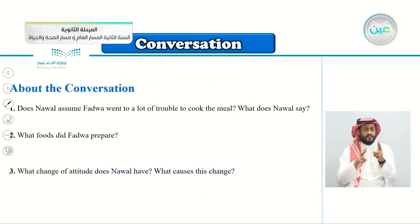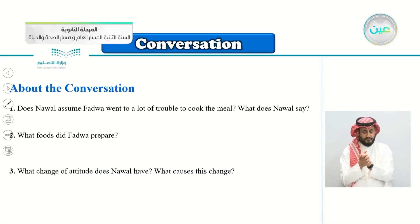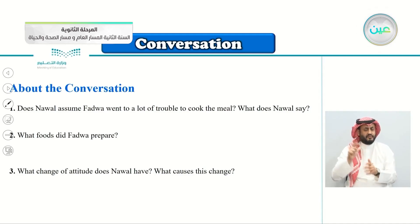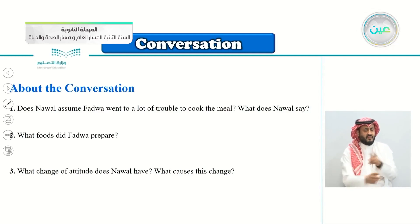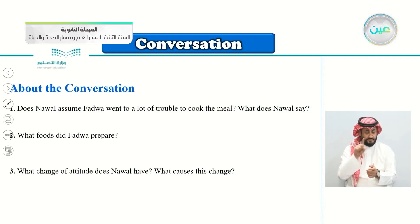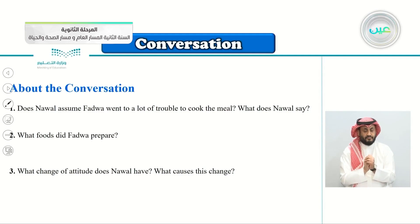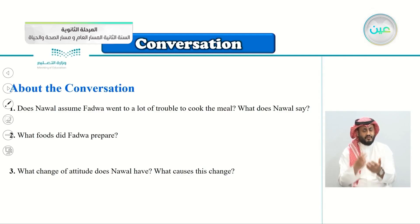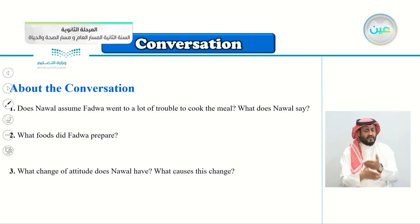About the conversation questions: Does Nawal assume Fadwa went to a lot of trouble to cook the meal? What does Nawal say? What foods did Fadwa prepare? What change of attitude does Nawal have, and what causes this change?